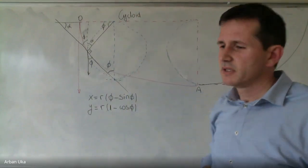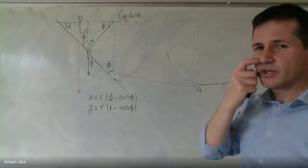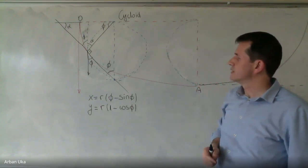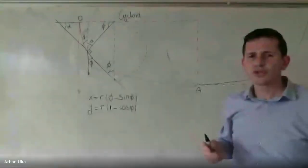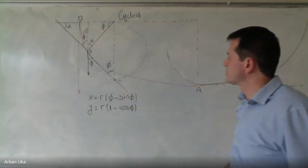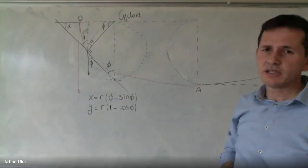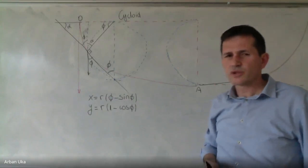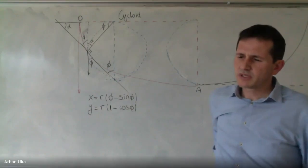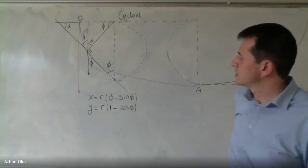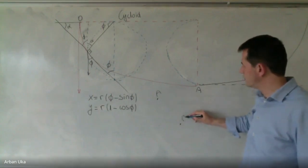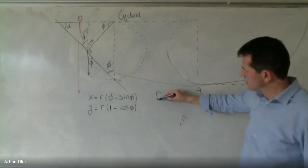Here we'll do a short discussion on the cycloid and what different parameters one can consider when we study the equation of motion — how the path of this specific curvature, shown here in red, can develop. This was first posed as a question by Bernoulli sometime in the end of the 1600s, and the challenge was to identify what is the shortest time needed to go from point A to point B.